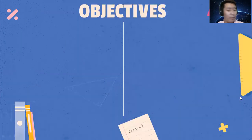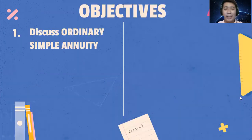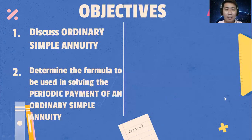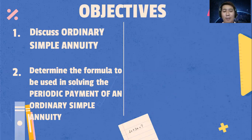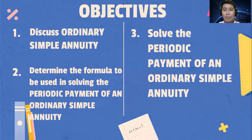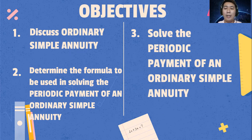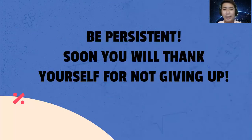What are the objectives of this lesson? Number one, discuss ordinary simple annuity. Number two, determine the formula to be used in solving the periodic payment of an ordinary simple annuity. And number three, solve the periodic payment of an ordinary simple annuity.